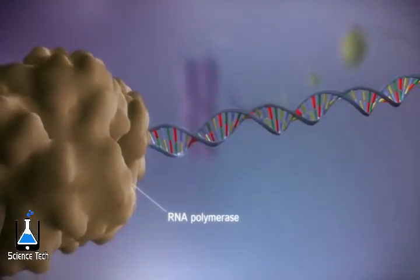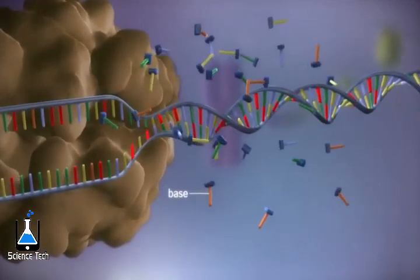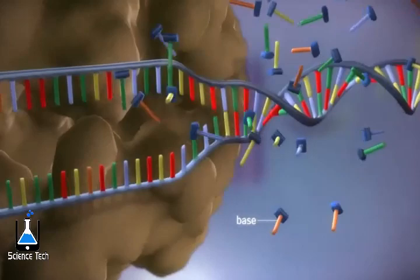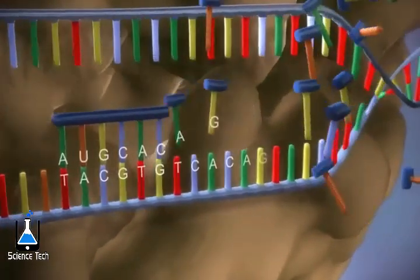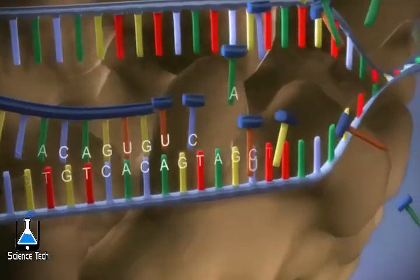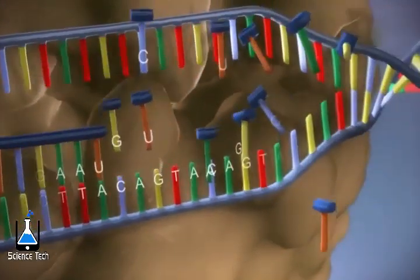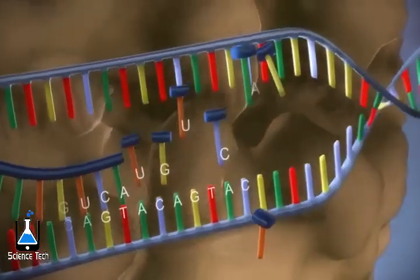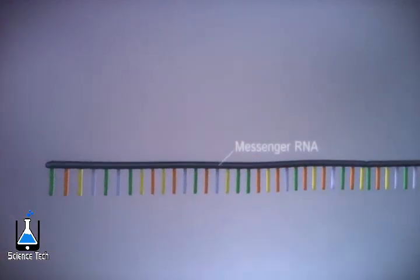RNA polymerase moves along the DNA, making a strand of messenger RNA out of free bases in the nucleus. The DNA code determines the order in which the free bases are added to the messenger RNA. This process is called transcription.